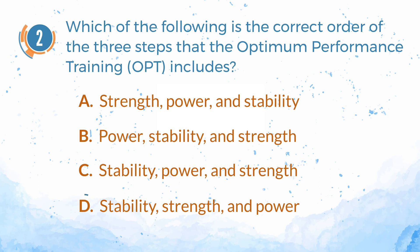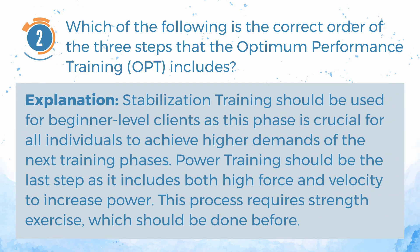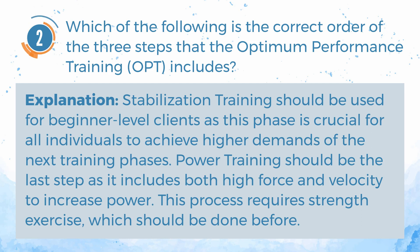The answer is D. Stability, Strength, and Power. Explanation: Stabilization training should be used for beginner-level clients, as this phase is crucial for all individuals to achieve higher demands of the next training phases. Power training should be the last step as it includes both high force and velocity to increase power. This process requires strength exercise, which should be done before.